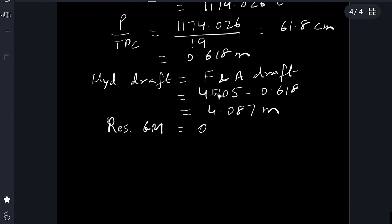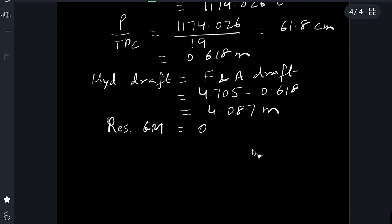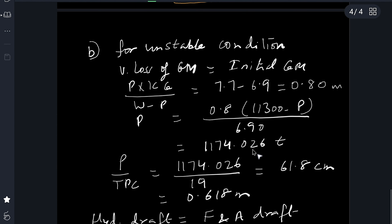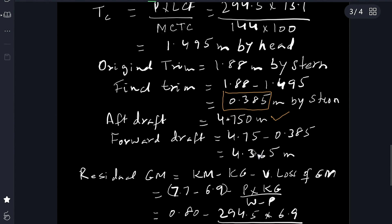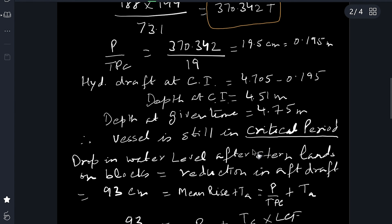Since the ship is taking the blocks all over, the forward draft and aft draft will also be the same as the hydrostatic draft: 4.087 meters forward, 4.087 meters aft, and hydrostatic draft also 4.087 meters. The residual GM will be zero at this stage. This is the answer for the second part.